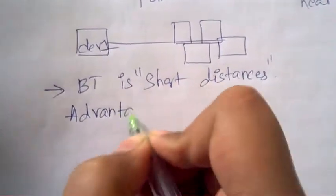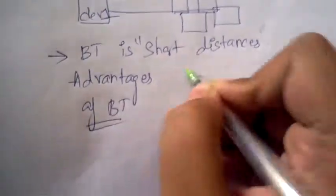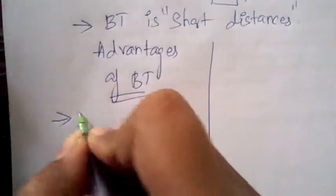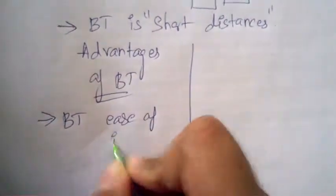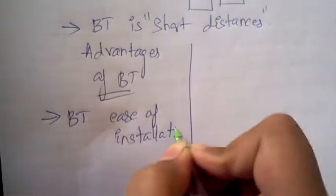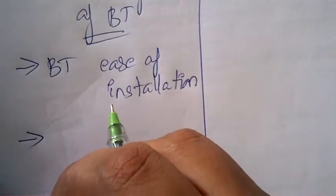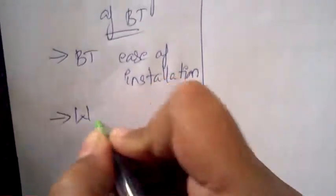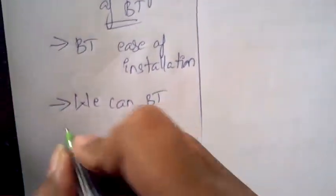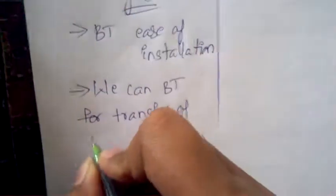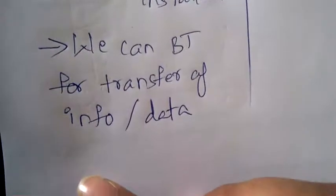Now let us discuss the advantages and disadvantages of bus topology. The first advantage is ease of installation — it is very easy to install. The second advantage is that we can use bus topology for the transfer of information or data.